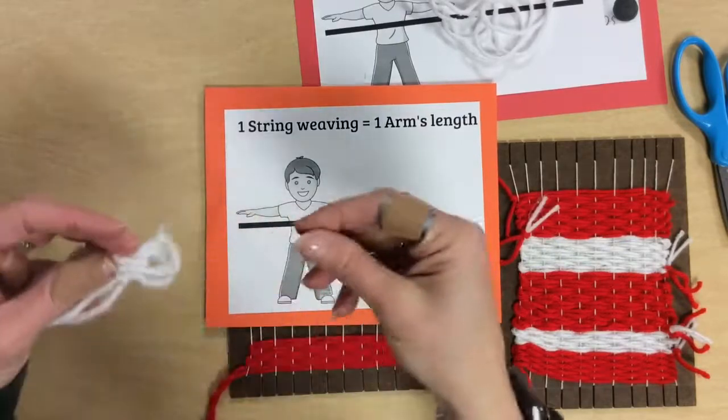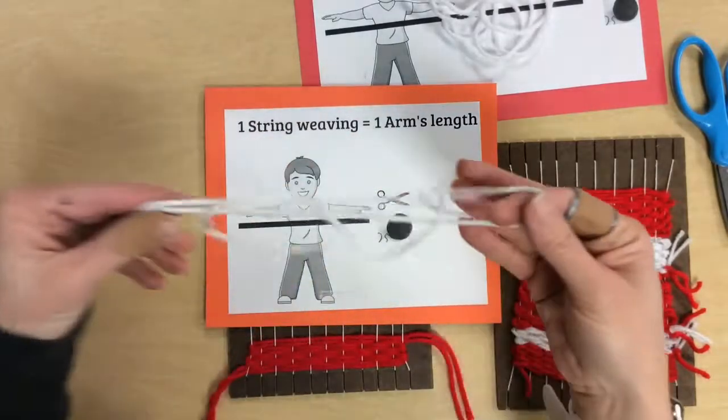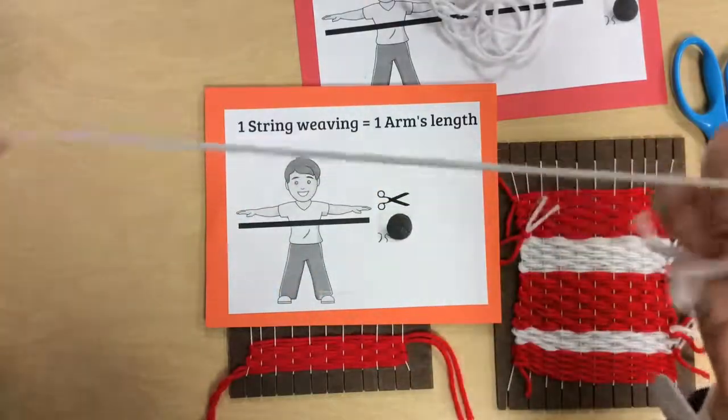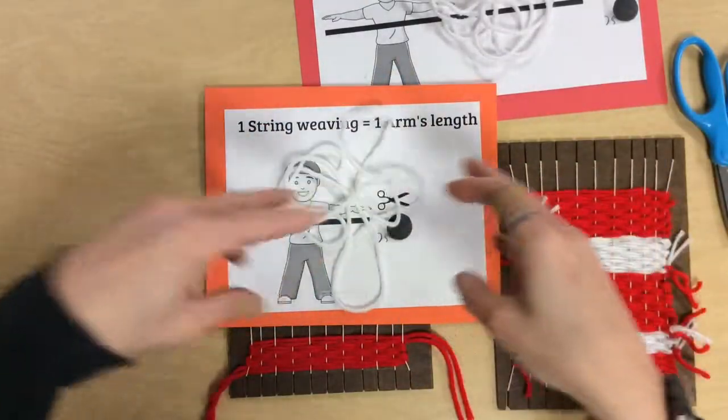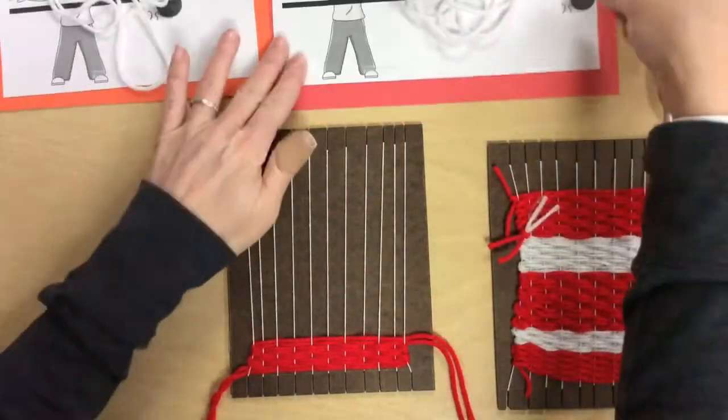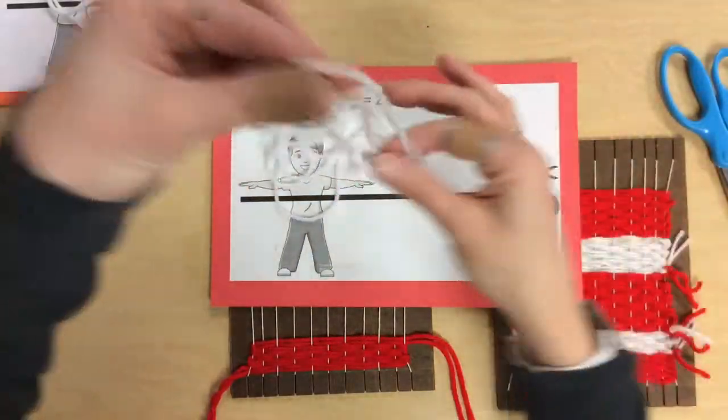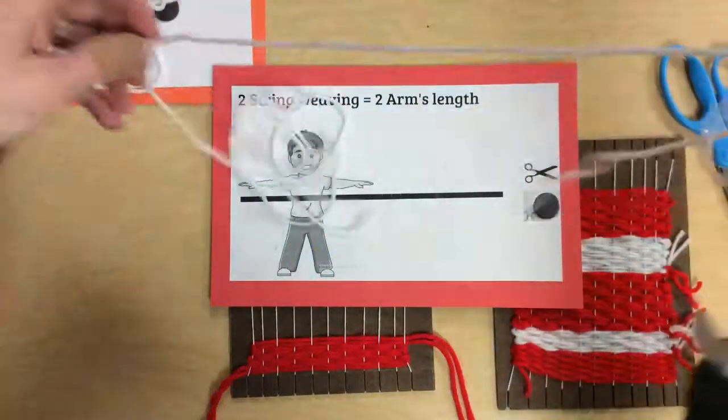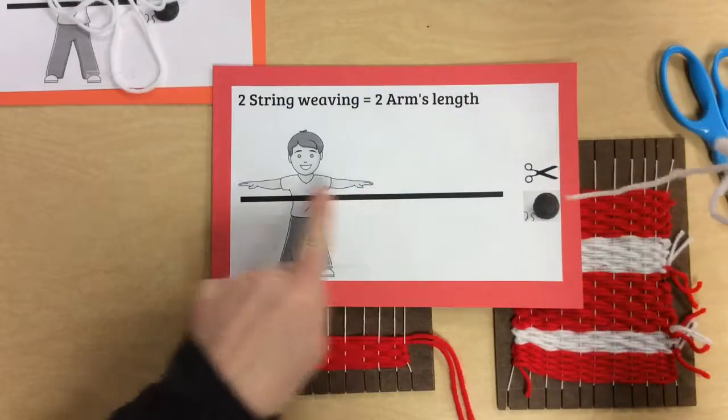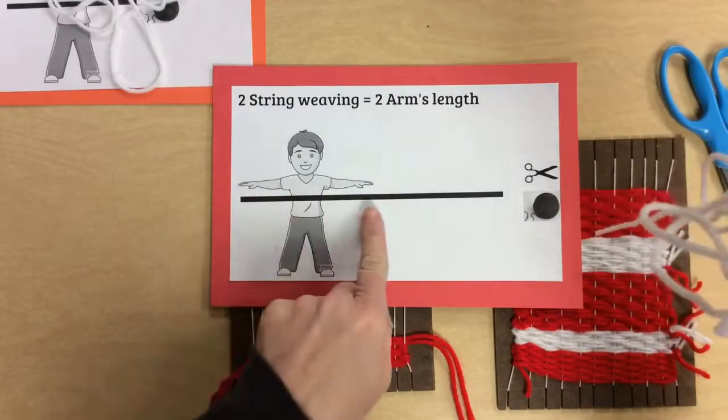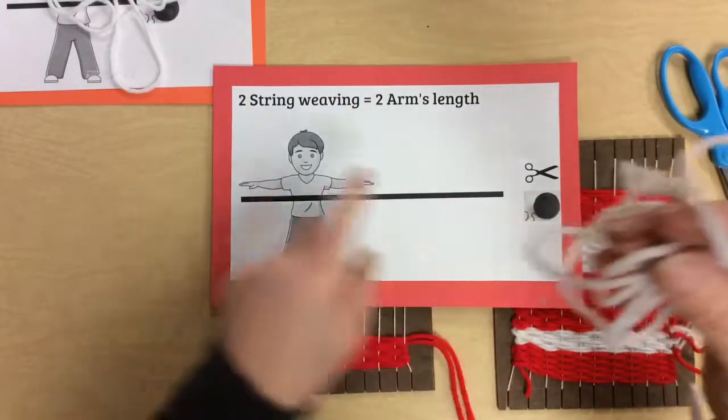This is one arm's length. If you see where the boy, where he's pulled it out, this is one arm's length, so the yarn is not as big. This is a picture that I made for the two arm's length. See how this is twice as long because it's two of your wingspans here. You don't cut it in the middle, you keep going.